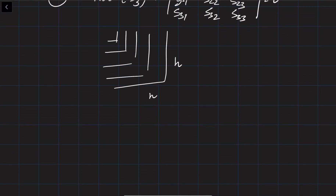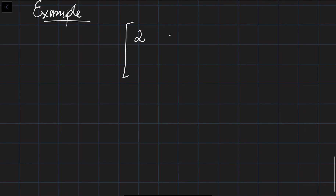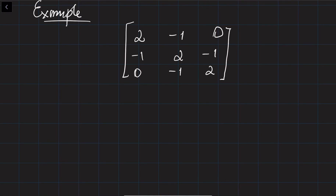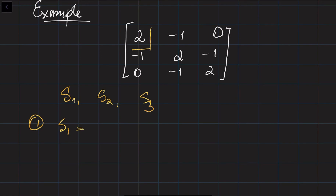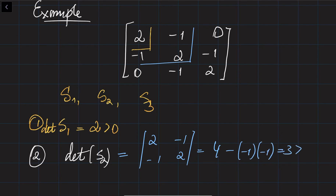Let's do an example for the 3 by 3 case. Given the matrix with entries 2, minus 1, 0, minus 1, 2, minus 1, 0, minus 1, 2 — we create three submatrices S1, S2, and S3. The determinant of S1 is simply 2, which is positive. The determinant of S2, the top-left 2 by 2 matrix [[2, minus 1], [minus 1, 2]], equals 4 minus 1, which equals 3 — also positive.